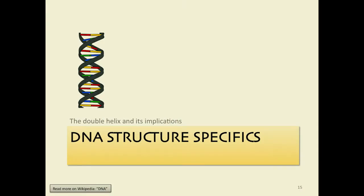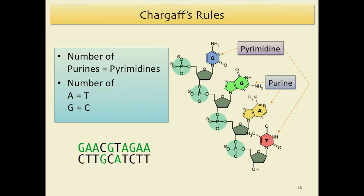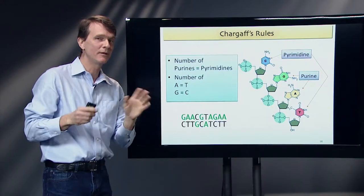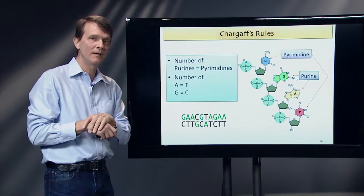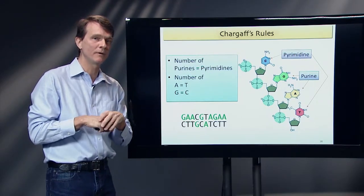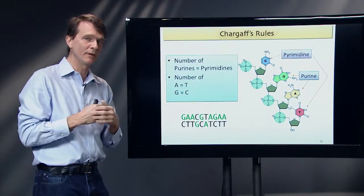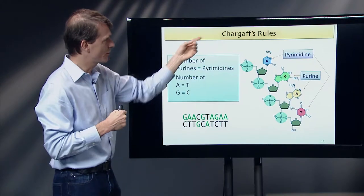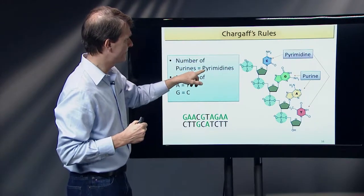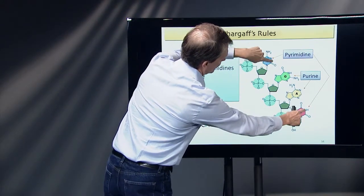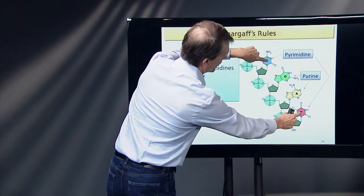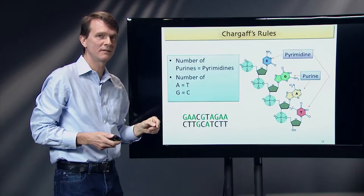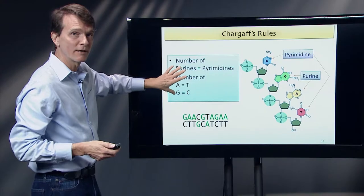Now, the double helix. This is probably the only time we'll talk about anything historic, but I'd like to briefly cover how the structure of DNA was determined. We usually hear about Watson and Crick, but probably the most important piece of information from the biochemical field was the observation by Chargaff that the number of purines equals the number of pyrimidines in DNA — the pyrimidines having a single ring, the purines having a double ring. Furthermore, the number of A's equals the number of T's, and the number of G's equals the number of C's. These became known as Chargaff's rules.